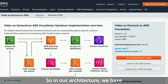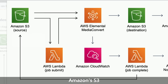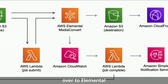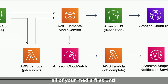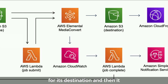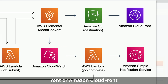In our architecture, we have Amazon S3, the simple storage service, that is the source of all your media files. You land all your video files there, then create a job or a trigger that moves it over to Elemental MediaConvert, where we transcode all of your media files into various deliverable formats. From there, it hands off to Amazon S3 as its destination, and then goes to Amazon CloudFront for global distribution.